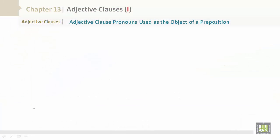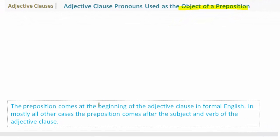Adjective Clauses. Adjective clause pronouns used as the object of a preposition. The preposition comes at the beginning of the adjective clause in formal English. In mostly all other cases, the preposition comes after the subject and verb of the adjective clause.